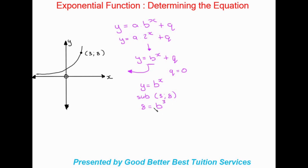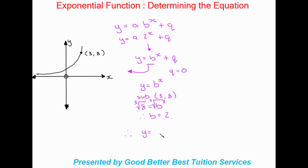Substituting in: 8 equals b to the power of 3. To solve for b, we need to cube root both sides, since anything cubed requires a cube root to undo. The cube root of 8 gives us b equals 2. So our final equation is y equals 2 to the power of x.